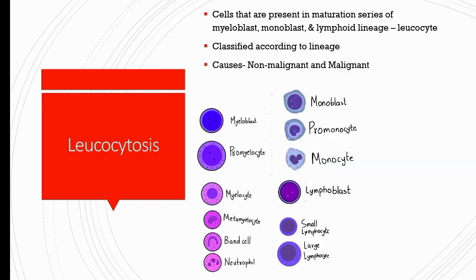What is a leukocyte? Any cells present in the maturation series of myeloblast, monoblast, and lymphoid lineages are called leukocytes. Leukocytosis is classified according to the cell lineages involved in the elevation of the WBC count. For example, neutrophilic leukocytosis is when there is an increase in absolute neutrophil count more than 7,000 per microliter in adults, along with a total WBC count more than 10,000 per microliter. This may be along with an increase in mature as well as premature cells.